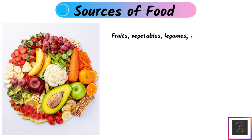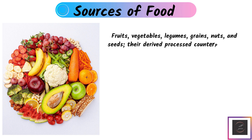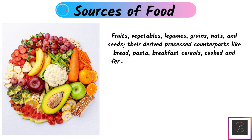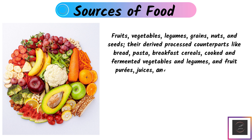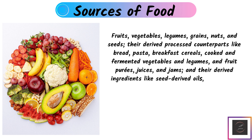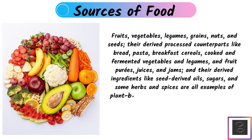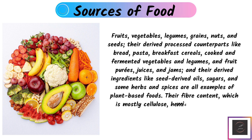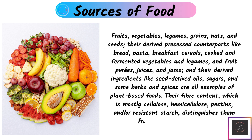Fruits, vegetables, legumes, grains, nuts, and seeds — and their derived processed counterparts like bread, pasta, breakfast cereals, cooked and fermented vegetables, legumes, puree, juices, and jams — as well as derived ingredients like seed-derived oils, sugar, and some herbs and spices, are all examples of plant-based foods. Their fiber content, which is mostly cellulose, hemicellulose, pectin, or starch, distinguishes them from animal-based meals.